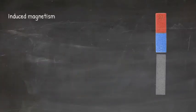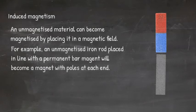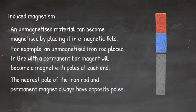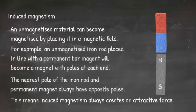Now let's look at induced magnetism. An unmagnetised material can become magnetised by placing it in a magnetic field. For example, an unmagnetised iron rod placed in line with a permanent bar magnet will become a magnet with poles at each end. The nearest pole of the iron rod and permanent magnet will always have opposite poles. This means induced magnetism always creates an attractive force.